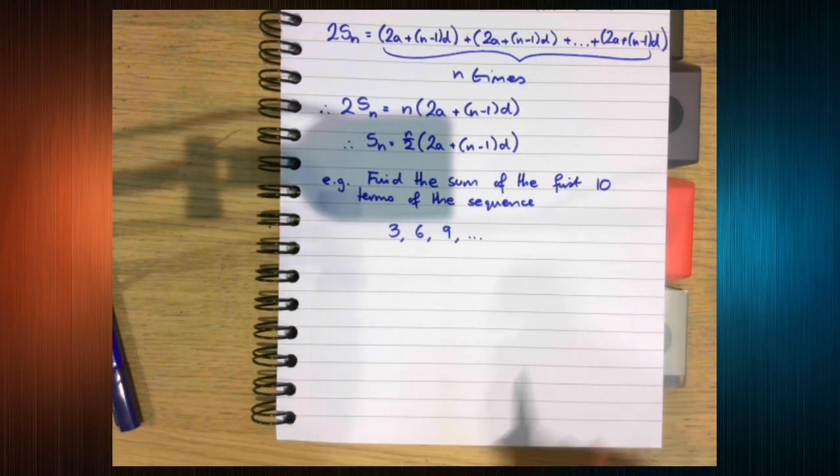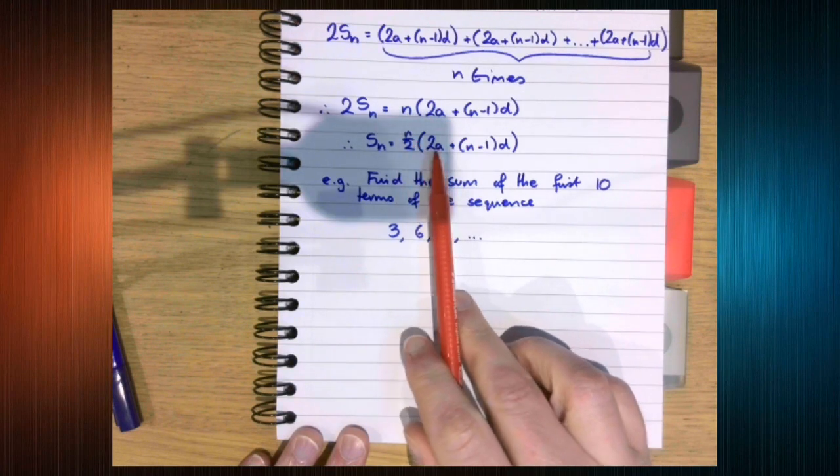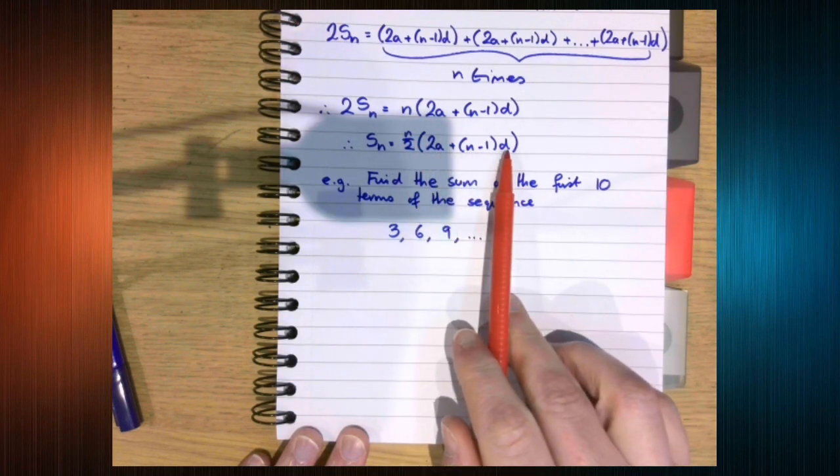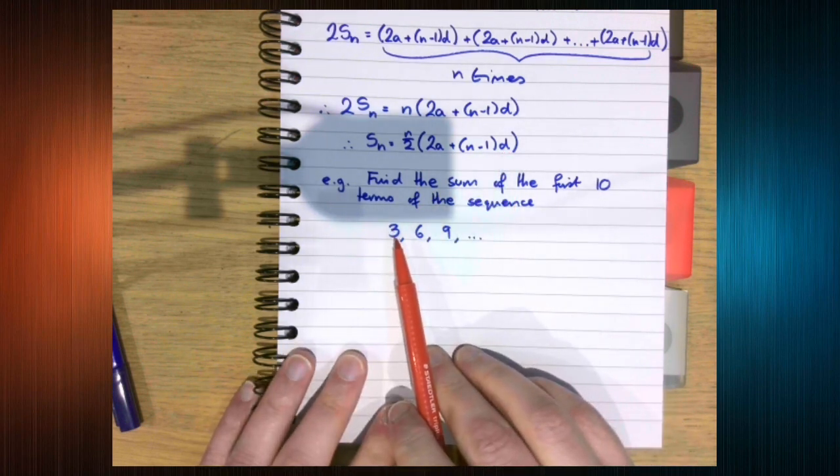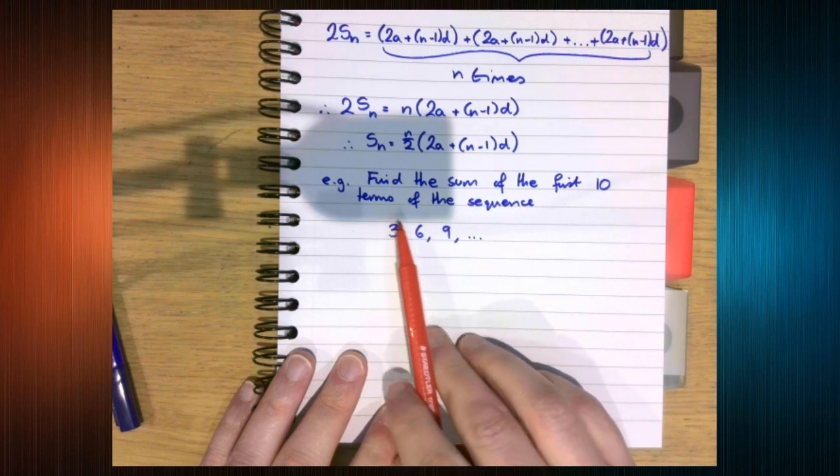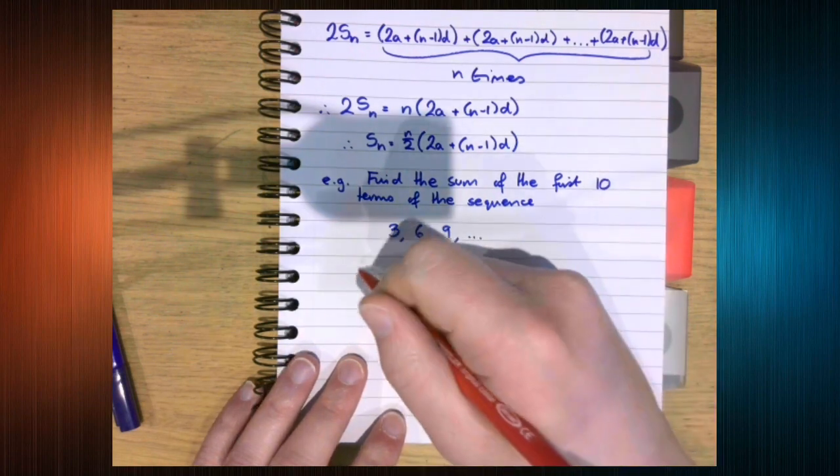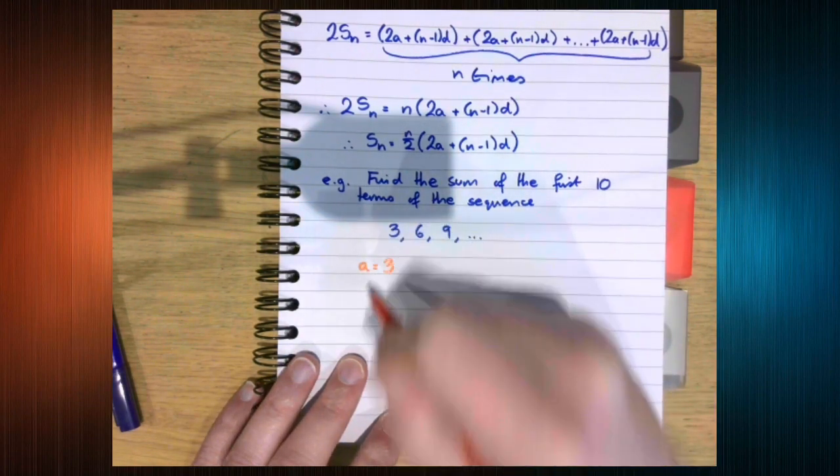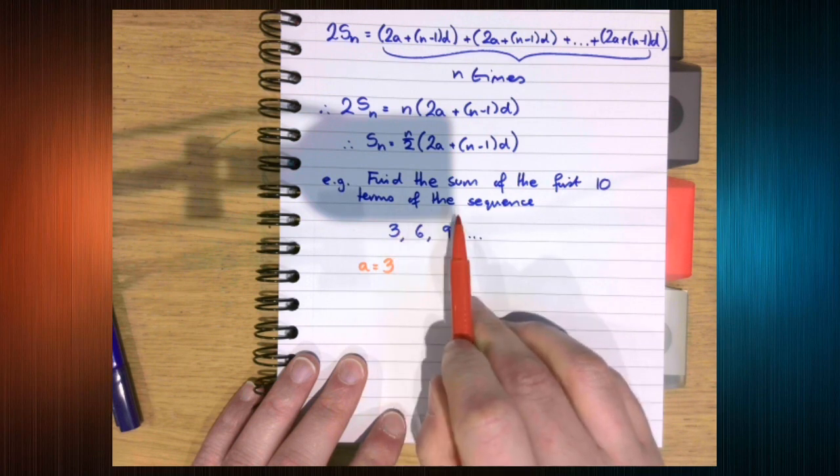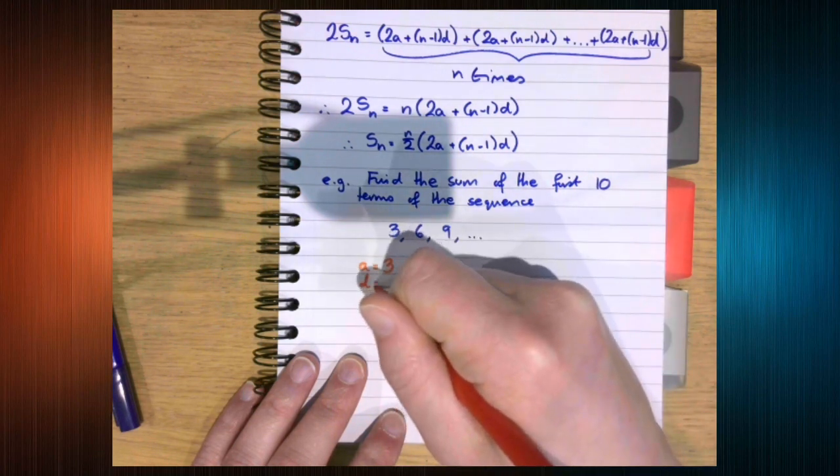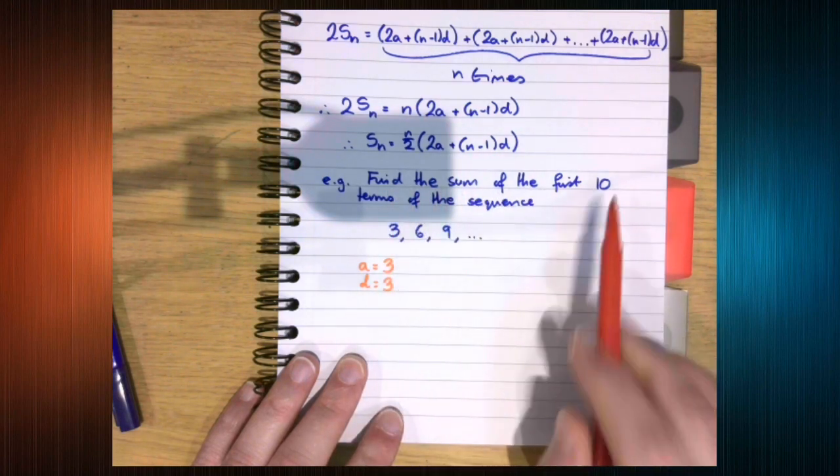So looking at the formula, we need three letters: a, n and d. A is 3. D is also 3. And we are trying to find the sum of the first ten terms.